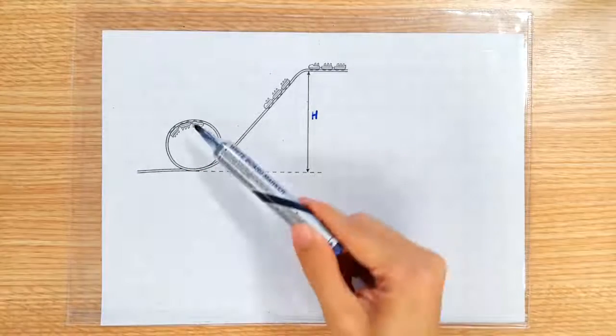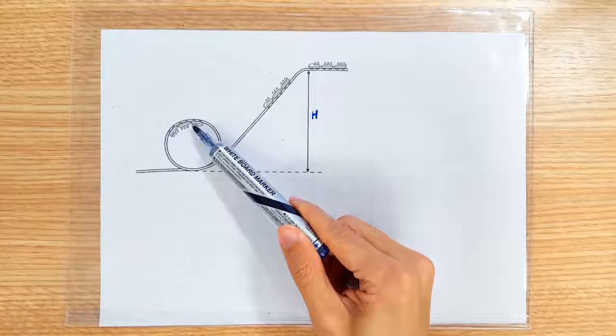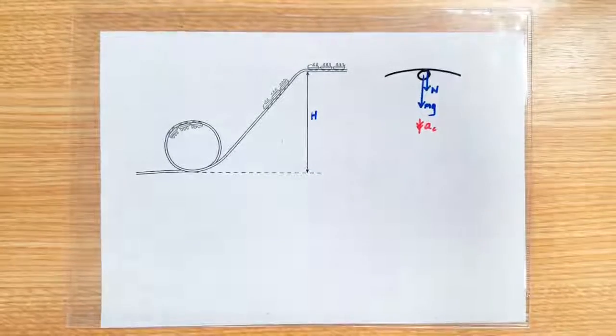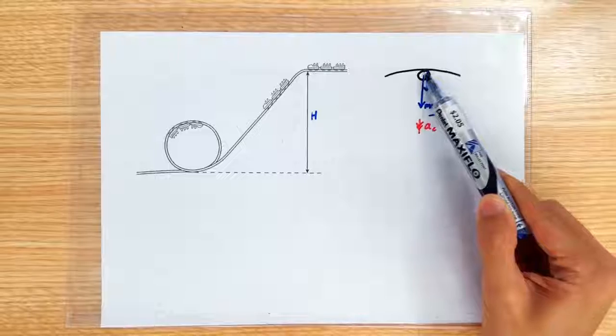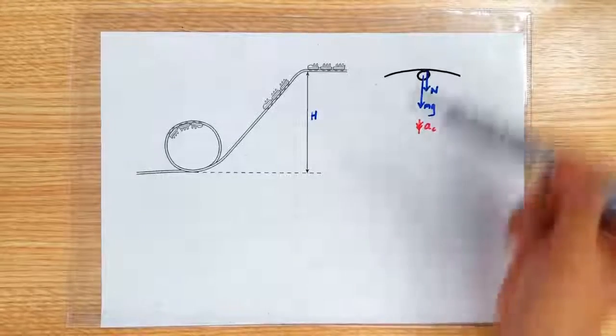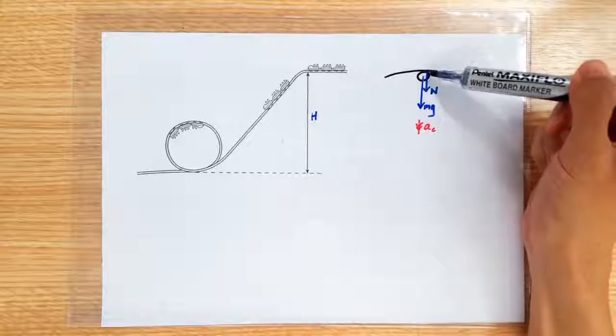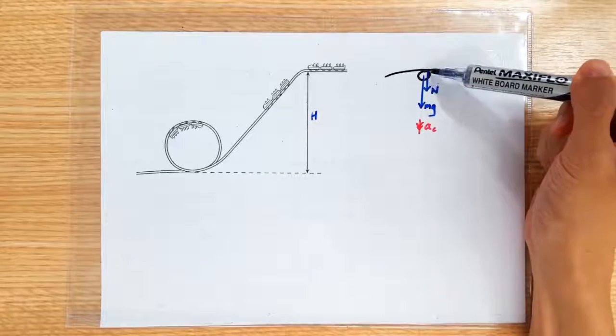So how fast must the roller coaster be when it arrives at the top? When the roller coaster is at the top, both the gravitational pull and the normal contact force that the ramp exerts on the roller coaster are downward in the centripetal direction.